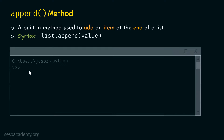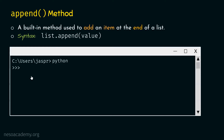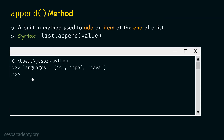Let's open our command prompt and activate the Python interactive shell. We'll type: languages = ['C', 'Cpp', 'Java']. Now we have a list of programming languages with a total of three languages: C, Cpp, and Java. Let's hit enter and type 'languages' to verify Python has accepted our list. We get C, Cpp, Java — which confirms it.